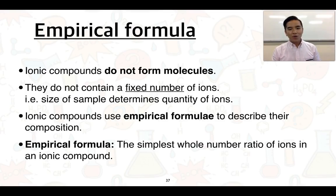To talk about empirical formulae, this is different to molecules in that empirical formulae don't contain a fixed number of atoms or ions within their structure. The size of the sample determines how many of those ions are present, but what we know is that ionic compounds still have a fixed ratio that we can express.